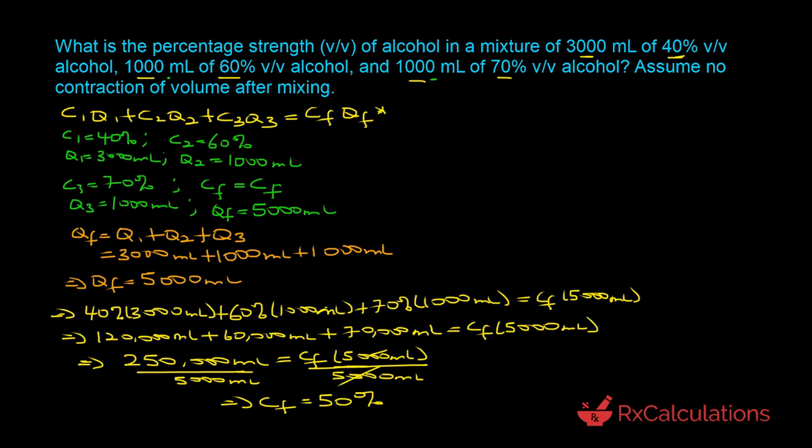We can do a quick sanity check to confirm the answer makes sense. The final concentration should not be greater than the highest concentration mixed (70%) nor lower than the lowest (40%). Our answer of 50% falls between those two extremes. Also, because we have a much larger volume of the 40% component (3000 mL), we'd expect the final concentration to be closer to 40 than to 70 — and indeed 50% reflects that.